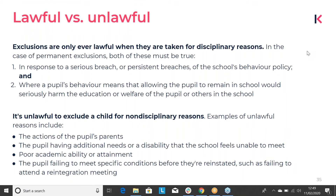Pupils can only be excluded for behavior-related reasons. In the case of a permanent exclusion, both of these things must be true: it has to be in response to a serious breach or persistent breaches of the school's behavior policy, and the pupil's behavior means that allowing them to remain in school would seriously harm their education or that of their fellow pupils. Exclusions for any other reason are unlawful — for example, you can't exclude a pupil because their parents are being disruptive, because they have a special educational need the school can't meet, because they're not performing well academically, or because they haven't met specific conditions for readmission.